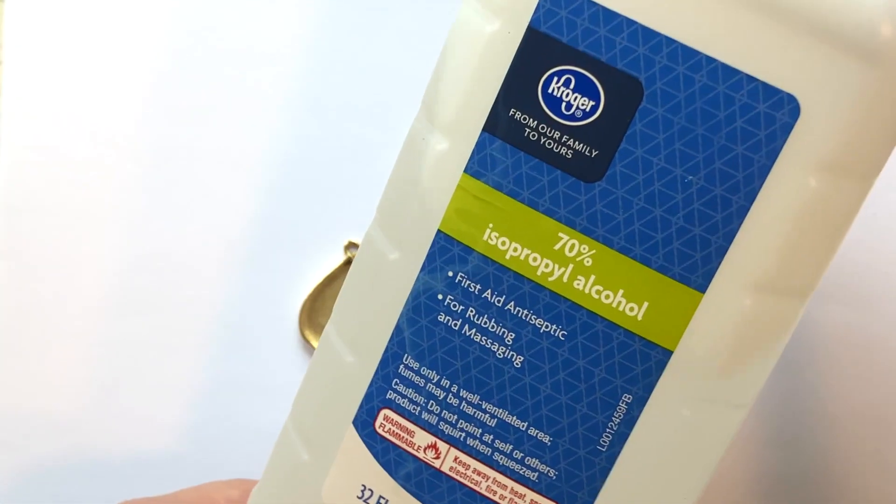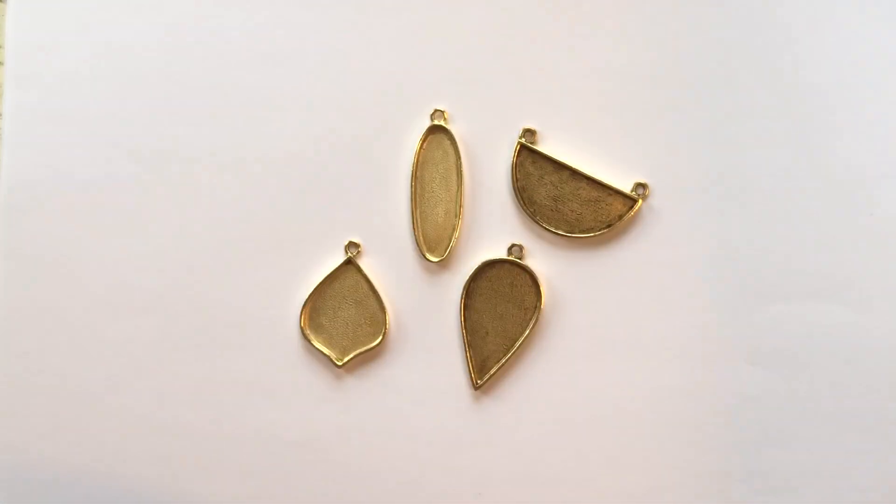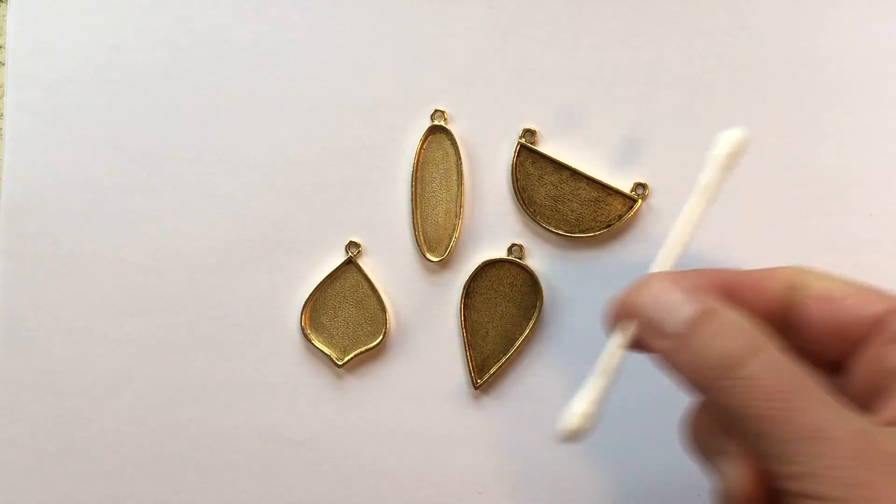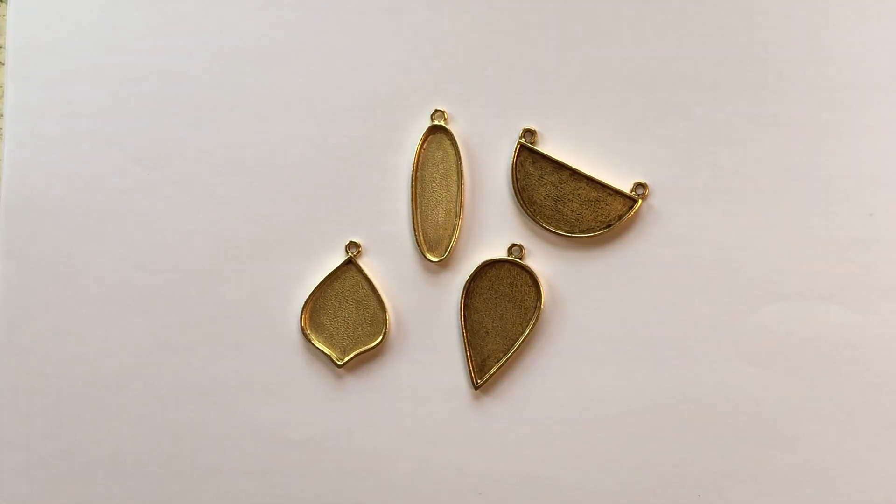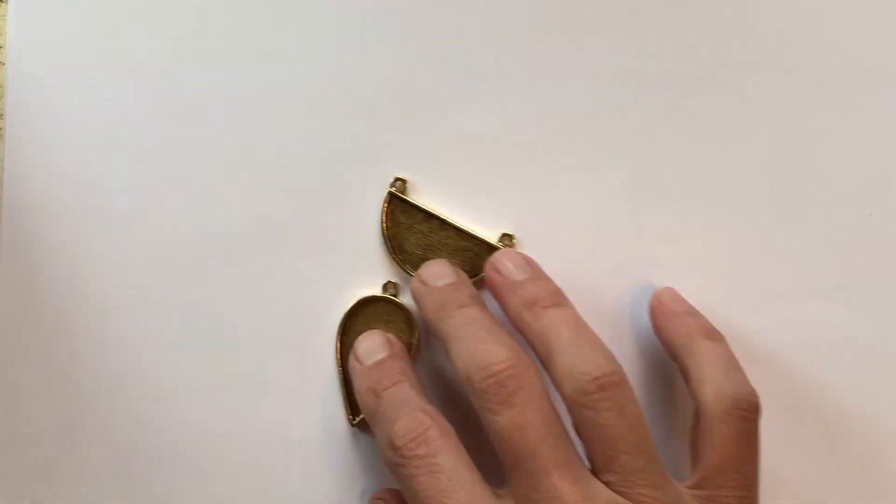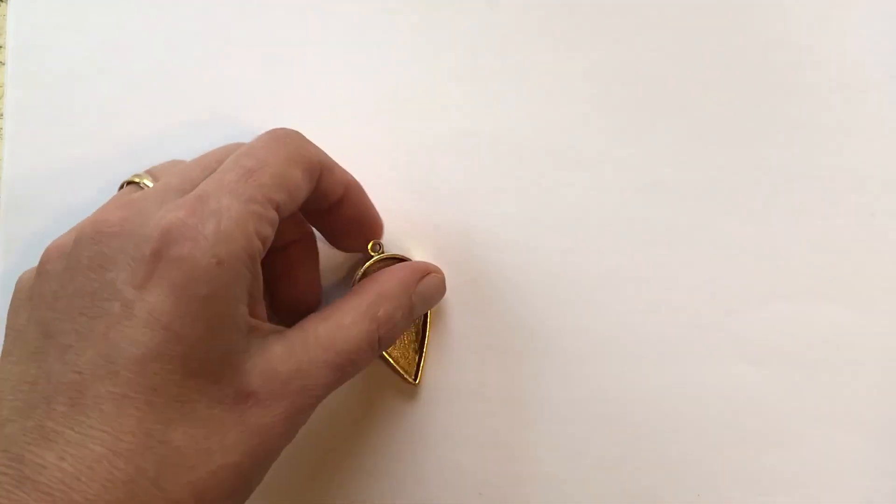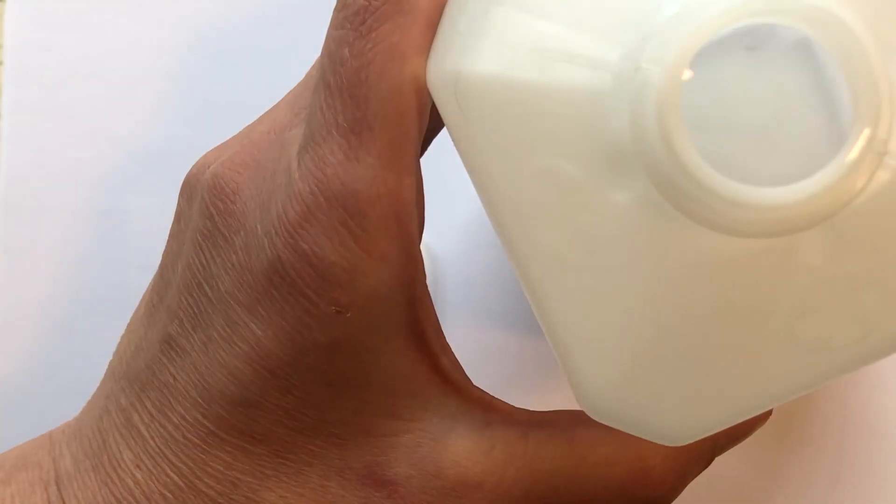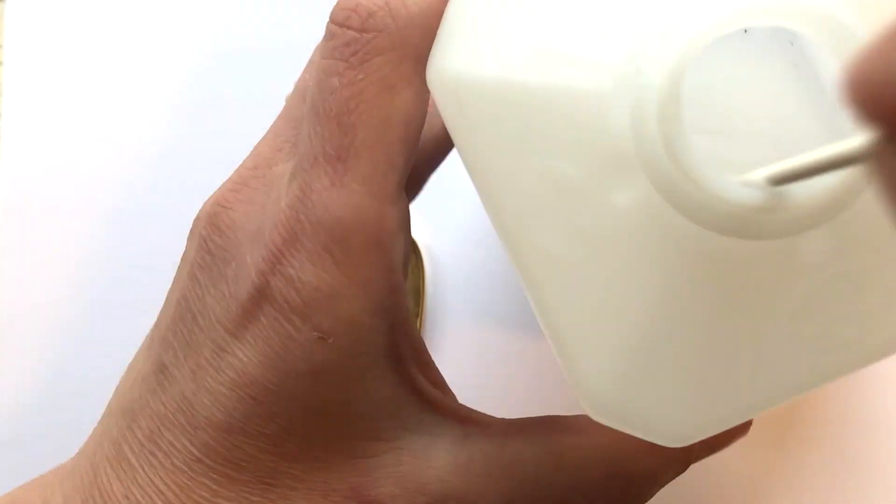To clean the findings you're going to want to have a little bit of rubbing alcohol and some q-tips and a couple of wet wipes. I'll go ahead and dip my q-tip right inside of the rubbing alcohol so it's nice and wet.